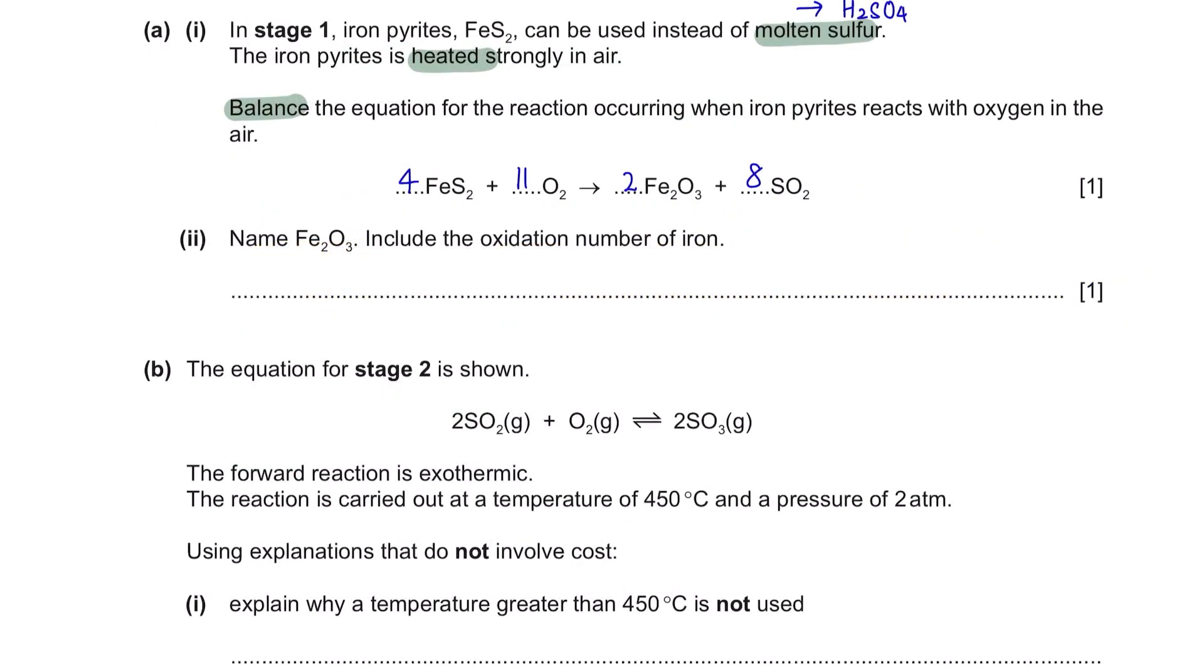Part 2. Name Fe2O3. Include the oxidation number of iron. Fe2O3 is iron oxide. They're also asking you to include the oxidation number of iron, which is 3. So that's how you're going to write the name.